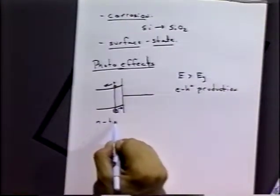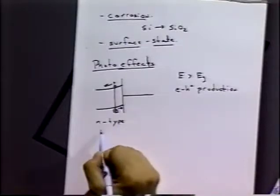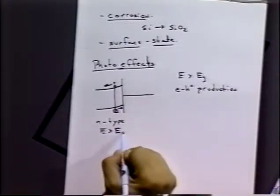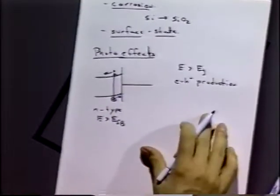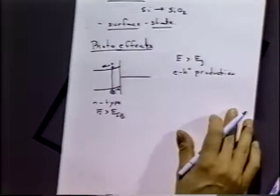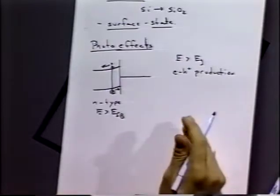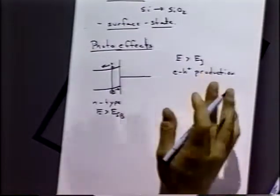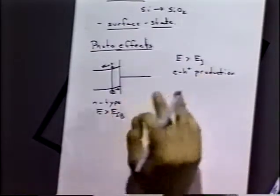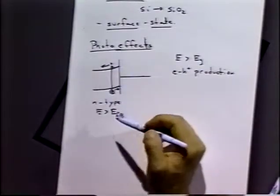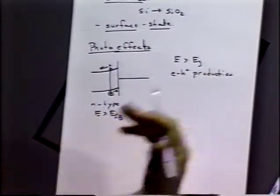So again, this is N-type, E greater than E flat band. P-type would have a similar sort of thing. It would have to have the E less than the E flat band for P-type. The surface charge is what's required. We have to have this bending of the bands in order to have an efficient separation of the charges to avoid the recombination effect.